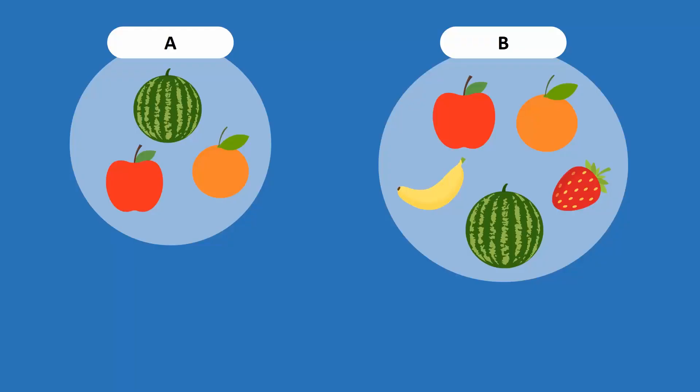Let's consider two sets A and B. Do you see any similarity or difference between these sets? We can see that both A and B are sets of fruits.